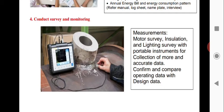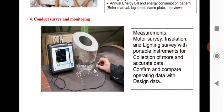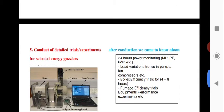Conduct survey and monitoring — for example, checking insulation on wiring and reading motor nameplates to collect more accurate data. Then conduct detailed trials and experiments for selected energy guzzlers — identifying high-energy-consuming equipment and analysing their performance.